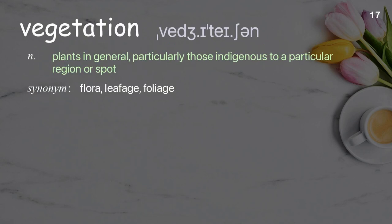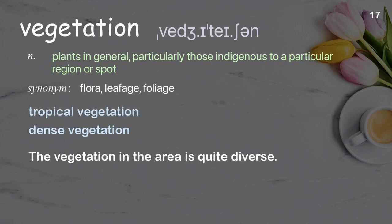Vegetation: Plants in general, particularly those indigenous to a particular region or spot. Examples: Tropical vegetation, Dense vegetation. The vegetation in the area is quite diverse.